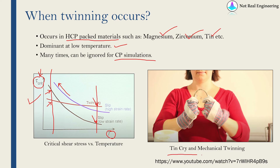I want to point out one very good video on YouTube — its name is 'Tin Cry and Mechanical Twinning.' In it you can actually see the experiments: a tin bar is bent by the experimenter, and when you bend the tin bar at low temperature, plastic deformation occurs due to twinning, and you can hear that clicking sound — that's why it is called tin cry. But if you bend the tin bar at high temperature, you will not hear any sound because all the plastic deformation occurs due to slipping. I will link this video in the description box below.